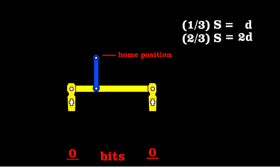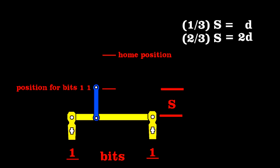To encode bits one-one, pull both tabs a distance s, and you'll move the blue bar by s units, or 3D. And that's position three.